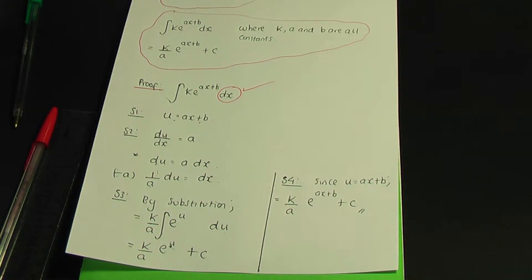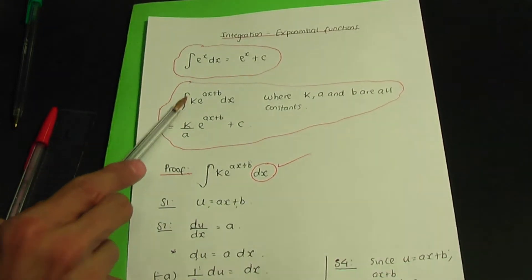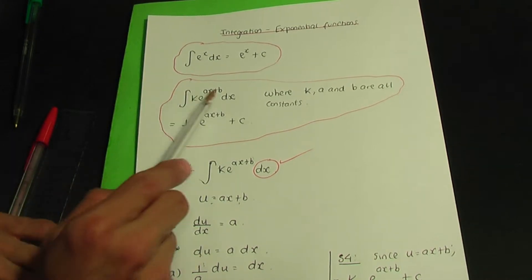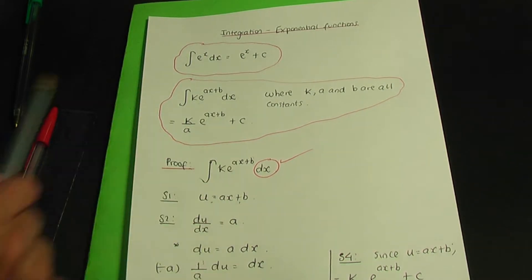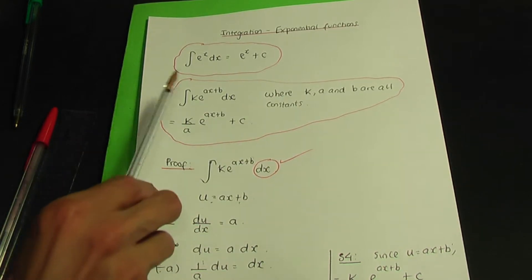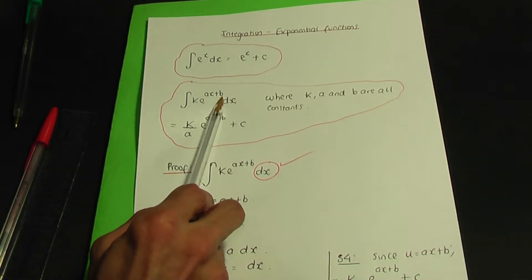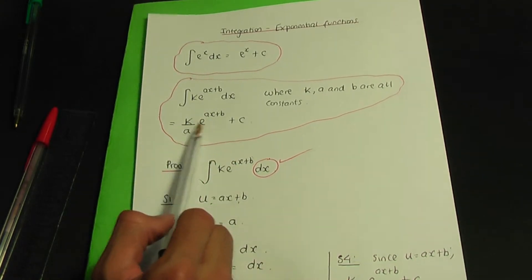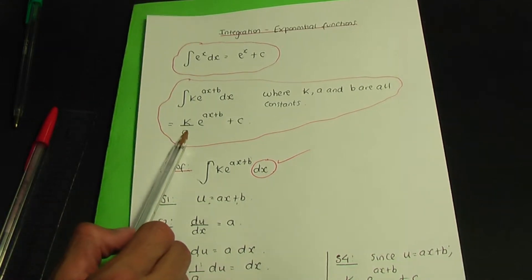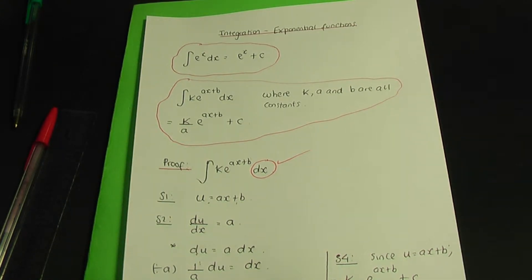So let's try some examples using this result. Remember, you can only use this result if k, a, and b are constants and if the power is of the form ax plus b. As I've said many times, don't memorise results — just learn what the result is trying to say. Only memorise the standard result. When you integrate, it's going to be the same function k·e to the power ax plus b, but you divide by the derivative of ax plus b.